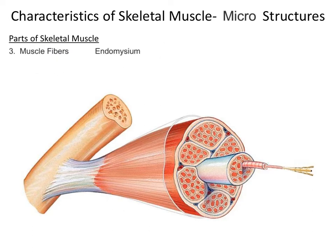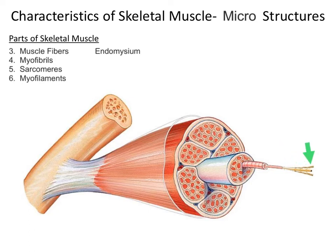Next, we're going to take a look at the micro structures of skeletal muscle. These structures require the aid of a microscope. Beginning with muscle fibers, muscle fibers are a bundle of myofibrils. And myofibrils are made up of tiny little segments or contractile units called sarcomeres. And it's these sarcomeres that contain the myofilaments, actin and myosin.